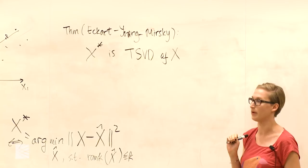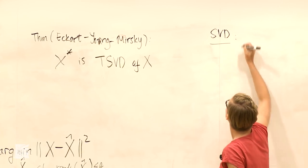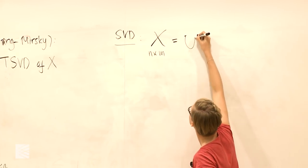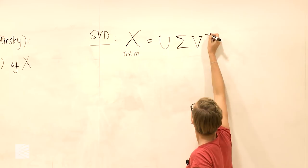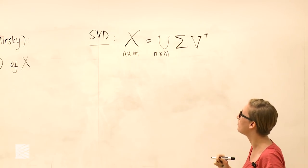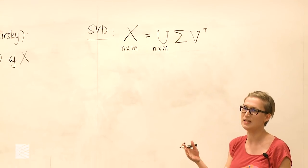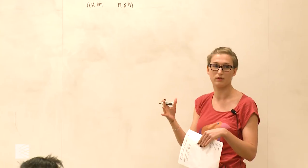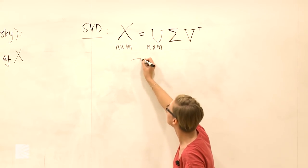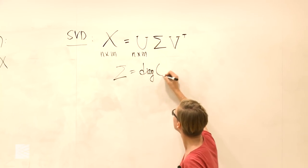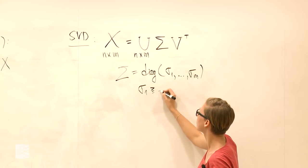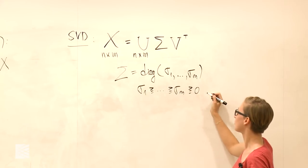Let's remember what SVD is about. I have the data matrix X, N by M, and I can write it as the product of three things. U is a matrix N by M whose columns are orthonormal vectors — length one, orthogonal to each other, forming an orthonormal basis in R^M. They are called the left singular vectors of X. Sigma is a diagonal matrix with the singular values on the diagonal, ordered from largest to smallest, all non-negative. Sigma is M by M.